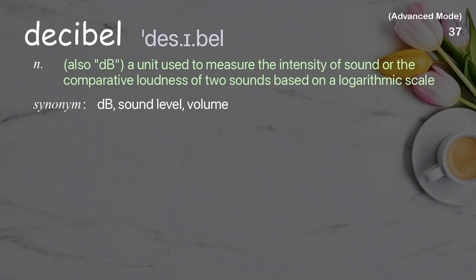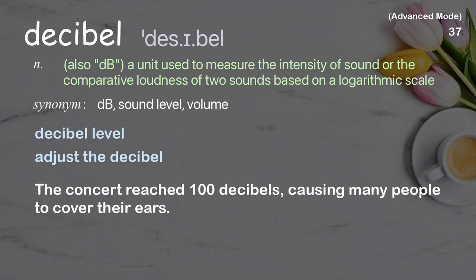Decibel (also dB). A unit used to measure the intensity of sound or the comparative loudness of two sounds, based on a logarithmic scale. Examples: decibel level, adjust the decibel. The concert reached 100 decibels, causing many people to cover their ears.